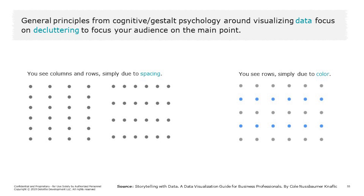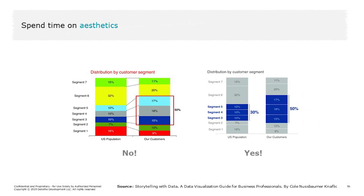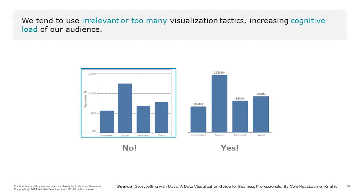One of my favorite principles in the area of cognitive psychology is around decluttering. Our brains are wired to detect nuances such as tiny differences in spacing as meaningful. Our brains prefer simplicity over complexity, and our brains also really like pretty things — research has shown that aesthetic designs can promote creativity, problem solving, and ultimately make the visual more acceptable.